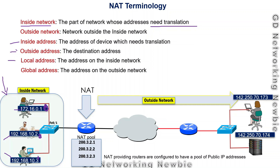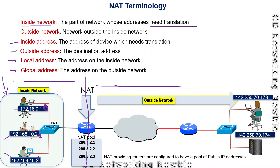We also have local addresses and global addresses. Local addresses are addresses on the inside network, and global addresses are addresses on the outside network. So the inside side uses local addresses and outside addresses are global addresses.